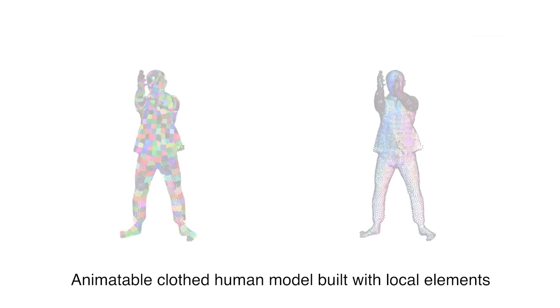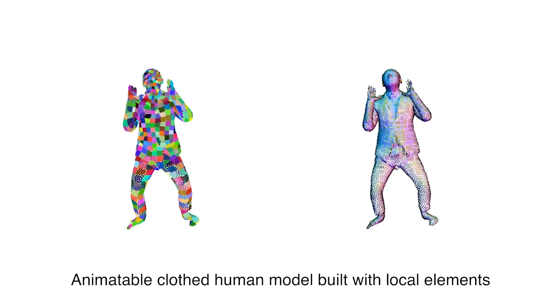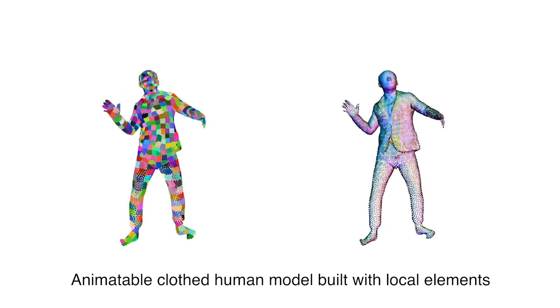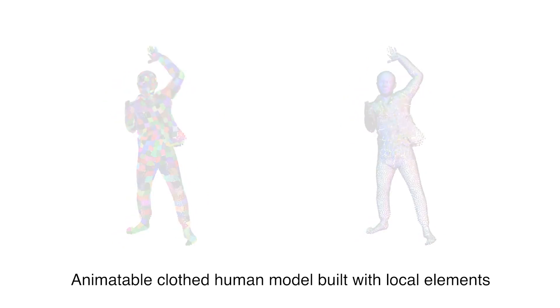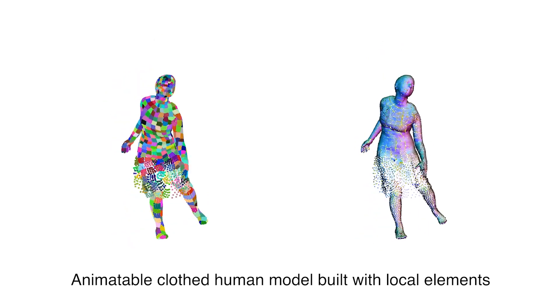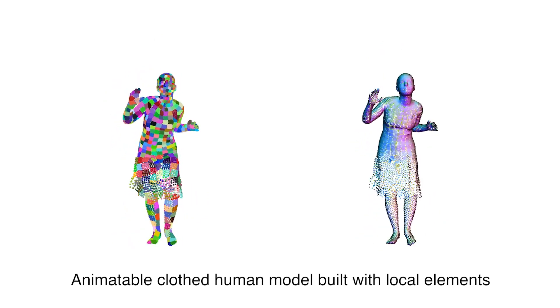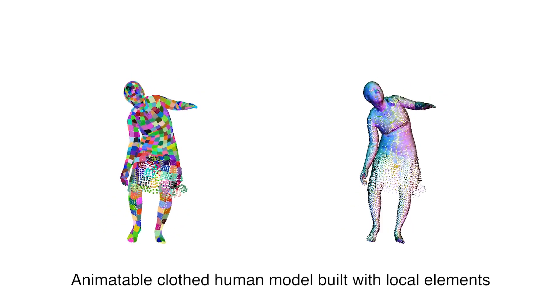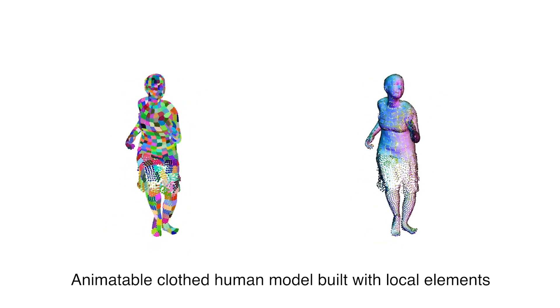Machine learning methods promise to address these problems by learning statistical clothing models from data. In this work, we focus on learning a clothed human body model from raw 3D point clouds that is detailed, copes with varied clothing topology, and can be animated using a simple body model.